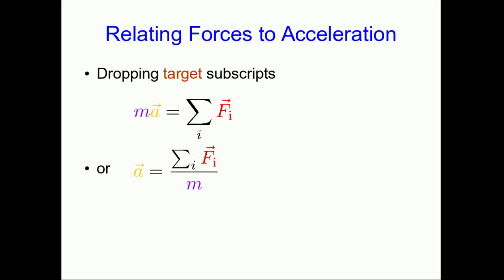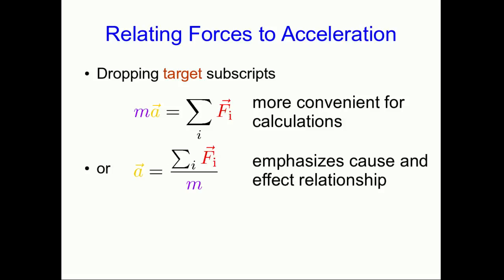And this is now the form of the equation that you're probably familiar with. I'll often write it this way, and these two forms of the equation have different advantages. The first one is more convenient for calculations, but the second one emphasizes this cause-and-effect relationship, that the forces are causing the acceleration, but the size of the acceleration that results is inversely proportional to the inertia of the object.